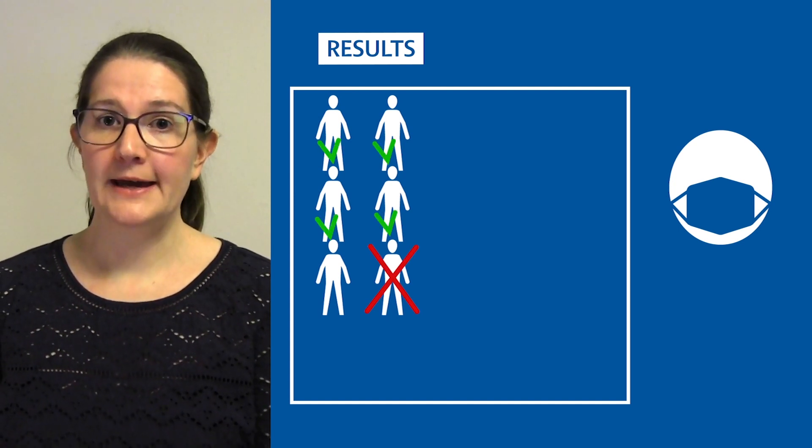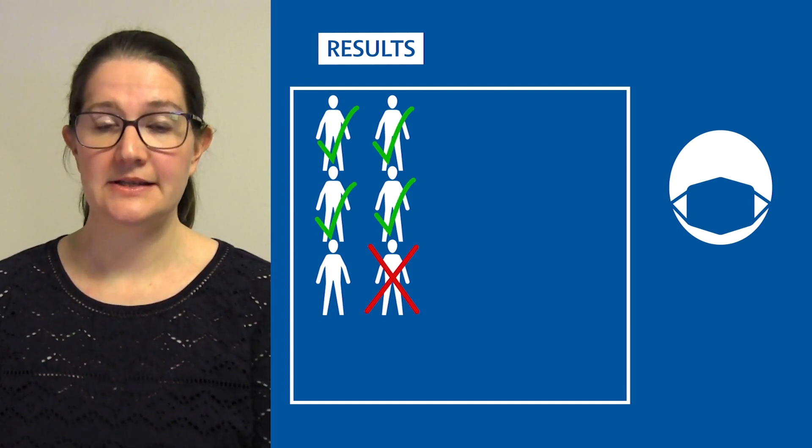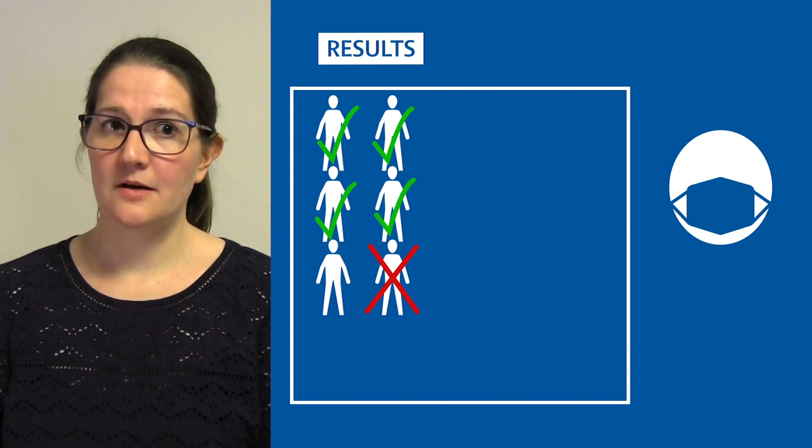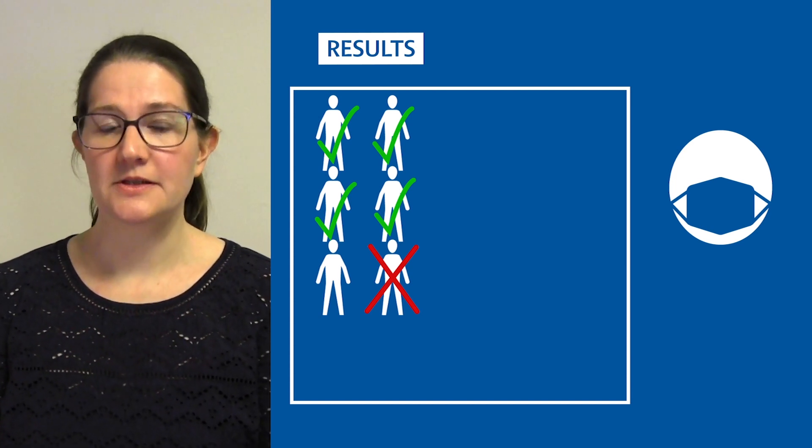Of the remaining five, four became sputum Xpert positive at six weeks, highlighting the potential for mask sampling to detect TB earlier than sputum.